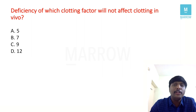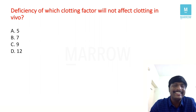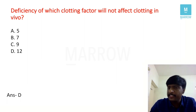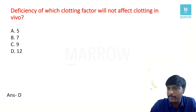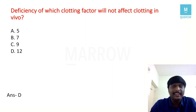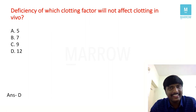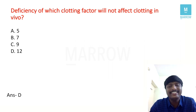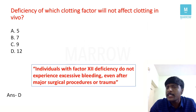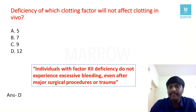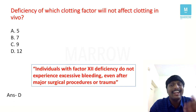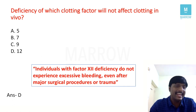Deficiency of which clotting factor will not affect clotting in vivo? The answer is factor 12 — also called the Hageman factor. It is a component of the intrinsic pathway. Individuals with factor 12 deficiency do not experience excessive bleeding even after major surgical procedures or trauma, because other clotting factors can compensate for this loss.